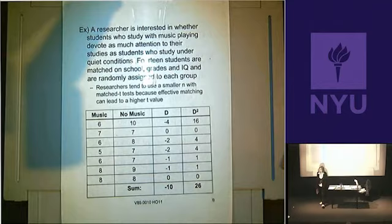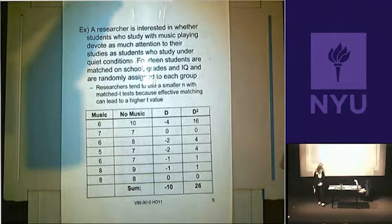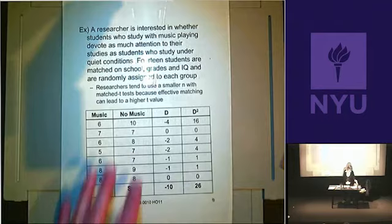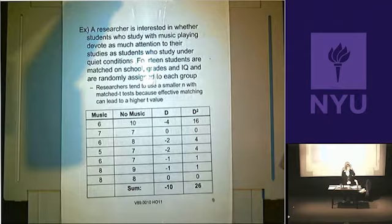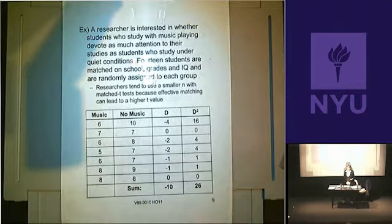We match students on variables that are relevant to the study — you don't need to match on things that are irrelevant, like eye color, and often it's hard to match on multiple variables so you pick the most important ones. Students are matched and then randomly assigned to either a music group or a no-music group, given some information to study, and then tested on it. These test scores are what we'll analyze.